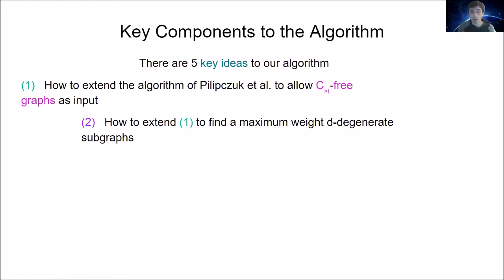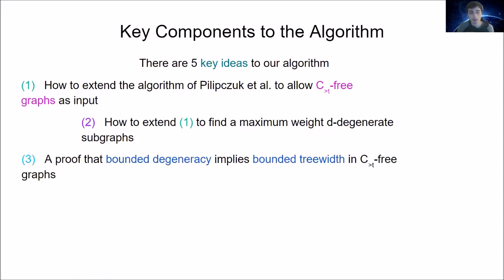The second key idea is how to extend that algorithm to find a maximum weight D-degenerate induced subgraph. The original algorithm only works for maximum weight independent set, which is a 0-degenerate graph. We want to generalize it to handle maximum weight D-degenerate induced subgraphs for arbitrary D.